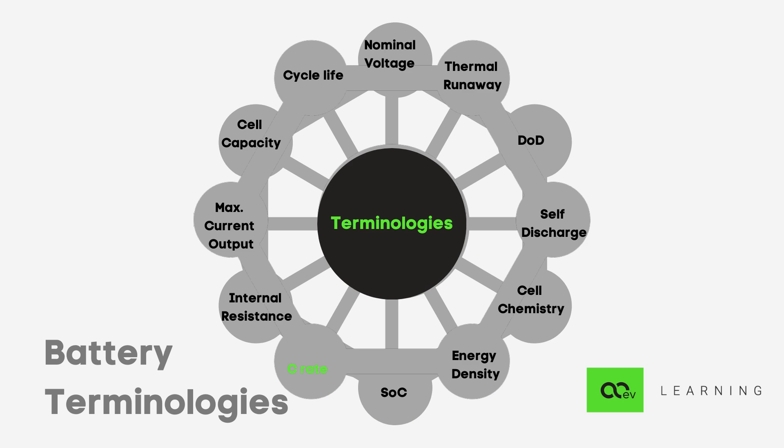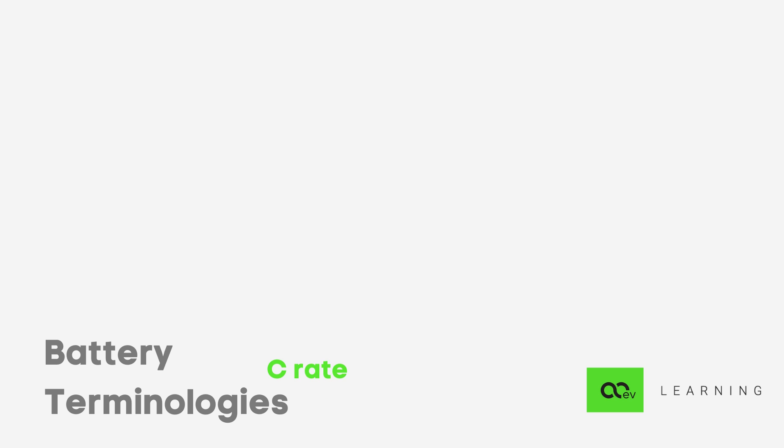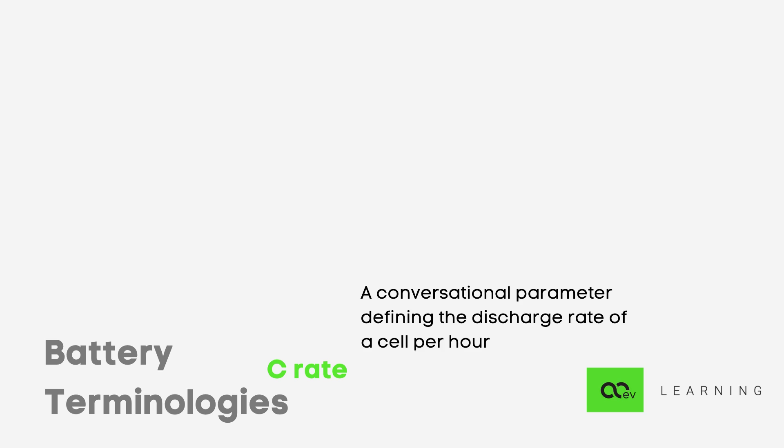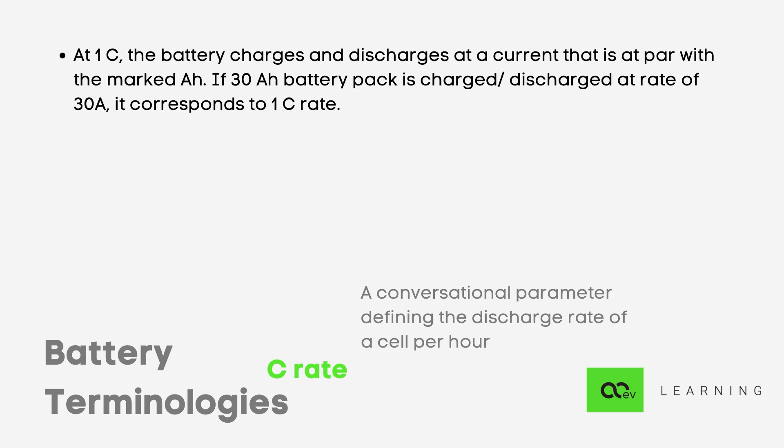The next parameter is the C rate, a conventional parameter defining the discharge rate of a cell in terms of current per hour. It is closely related to maximum current output. For a 1 ampere-hour cell at 1C discharge rate, it can deliver 1 ampere for one hour. At 2C discharge rate, it delivers 2 amperes for half an hour.